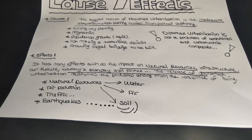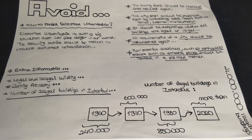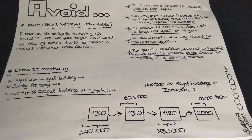Let's talk about how to avoid distorted urbanization. Distorted urbanization is a situation that can pose a danger in our world — it causes bad appearance and allows various problems in infrastructure systems and needs such as transportation. To prevent unplanned urbanization, the following actions should be taken: zoning plans should be checked and revised because they are not adequate; city plans should be prepared again by considering basic needs such as schools, hospitals, and transportation. It should be determined whether all buildings are legal or illegal, and the requirements of a city should be calculated again.